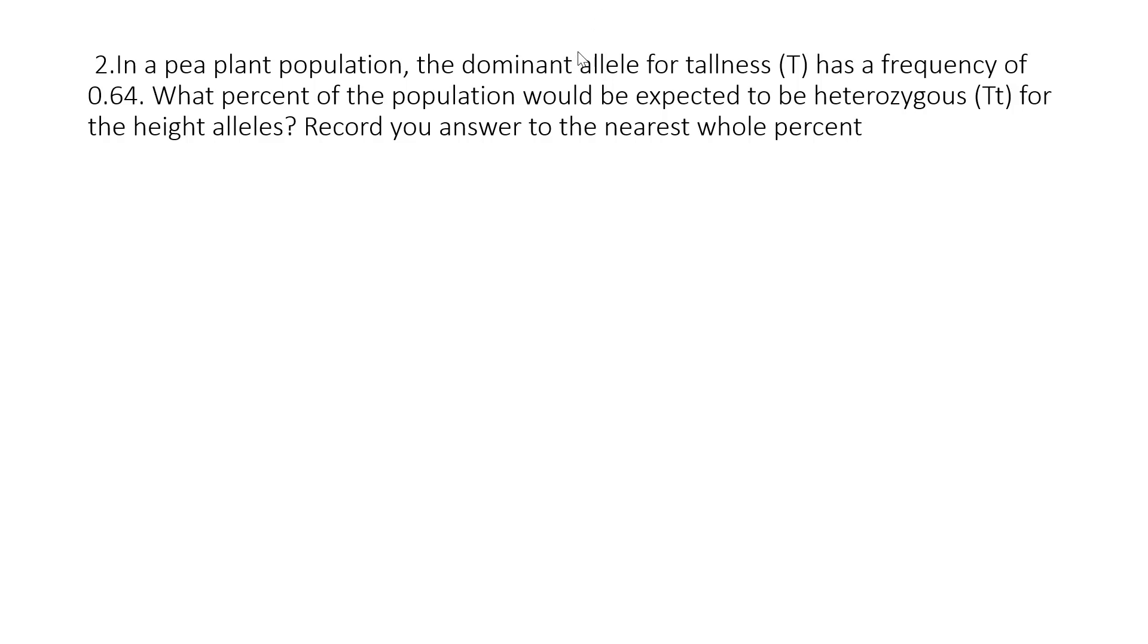Okay, question two from the Hardy Weinberg questions. It says in a pea plant population, the dominant allele for tallness, T, has a frequency of 0.64.